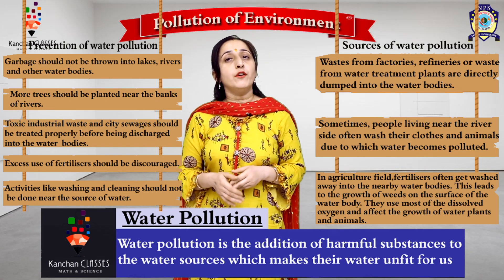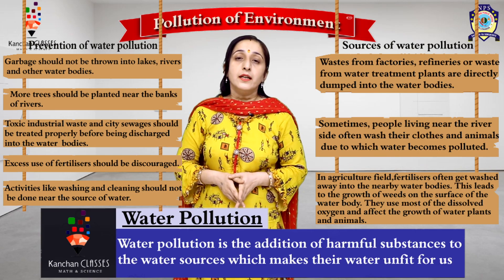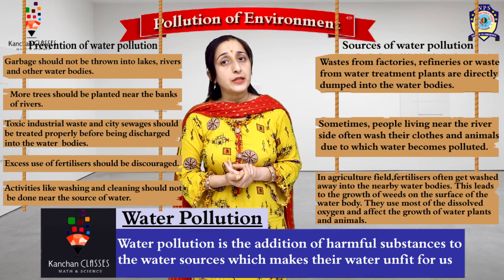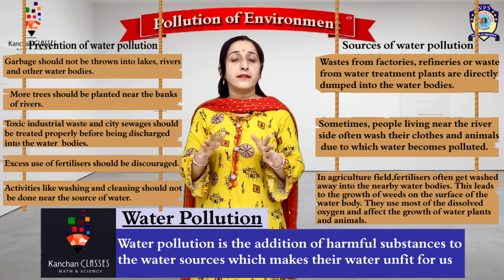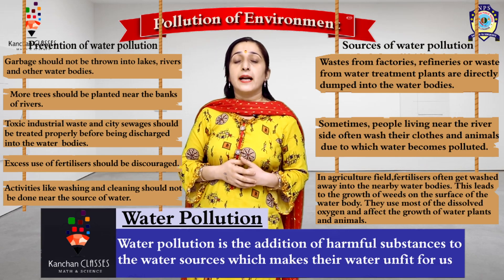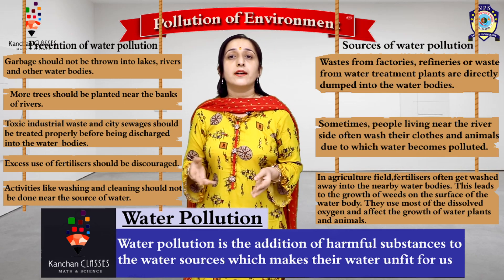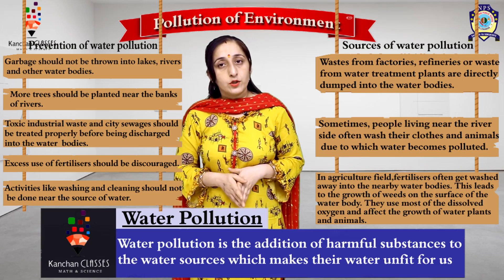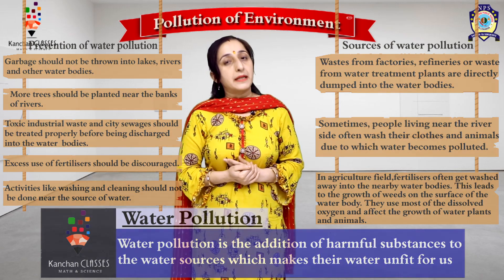What is the prevention of water pollution? The first one is to plant more and more trees. The waste material should not be directly dumped into the water bodies. Also, the use of fertilizers should be discouraged. So those were the preventions of water pollution.